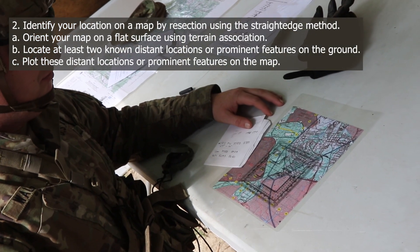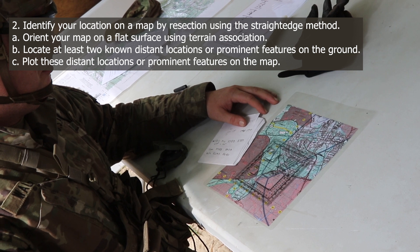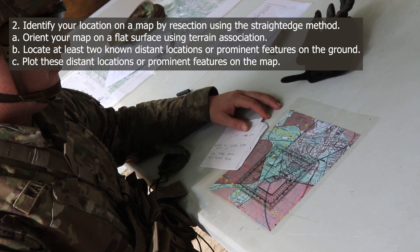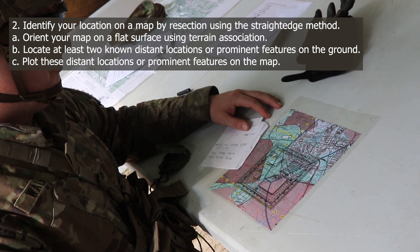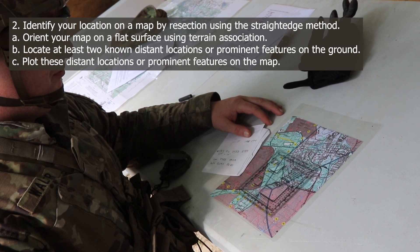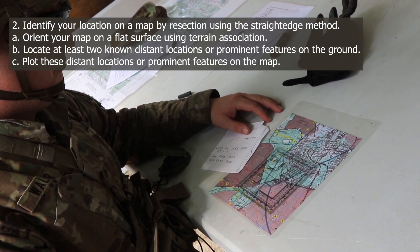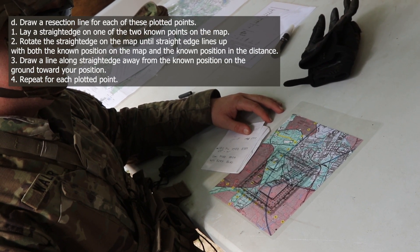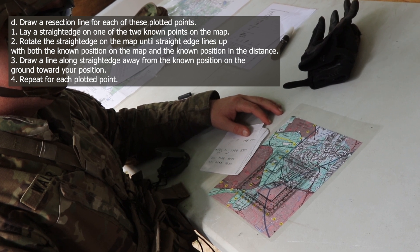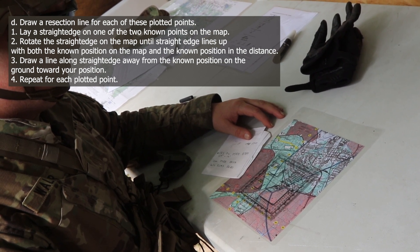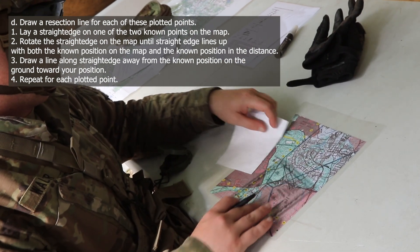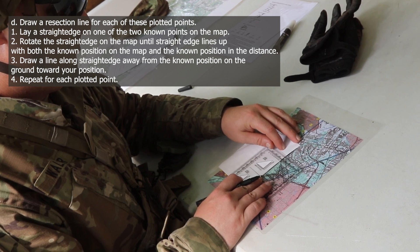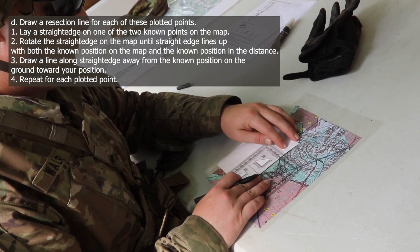Identify your location on a map by resection using the straight edge method. You can orient your map on a flat surface using terrain association. Locate at least two known distant locations or prominent features on the ground. You will plot these distant locations or prominent features on the map. Draw a resection line for each of these plotted points. Lay a straight edge on one of the two known points on the map. Rotate the straight edge on the map until the straight edge lines up with both the known position on the map and the known position in the distance.